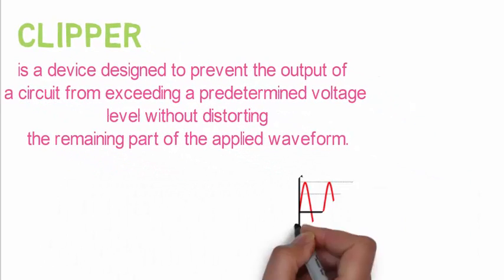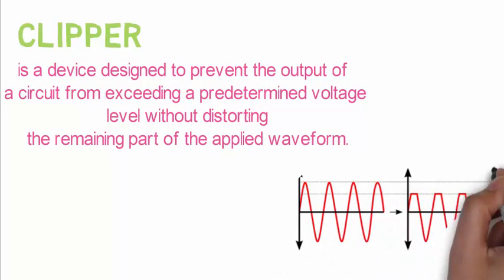I know the definition is pretty complex. As you can see the diagram here, it limits the voltage of the circuit and clips off the remaining part without distorting the waveform which was given as an output.